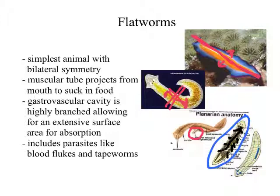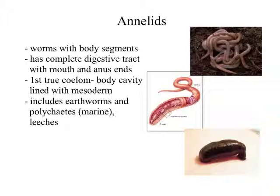Flatworms include some unpleasant parasites, like blood flukes, which get into your body and suck the blood out of your veins and arteries. Then there are tapeworms, which can infest the digestive tract of other animals and feed off whatever that animal eats. They may look interesting, but they are not fun if you get them inside of you.